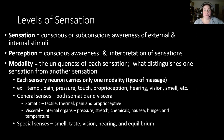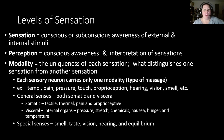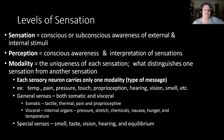Each sensory neuron carries only one modality — one type of message. They are specialized in that they only carry one type. For example, cold receptors only detect cold, warm receptors only detect warm or hot, and pain receptors detect different types of pain like sharp pain or throbbing. We also see pressure, touch, proprioception, hearing, vision, smell, and so on.